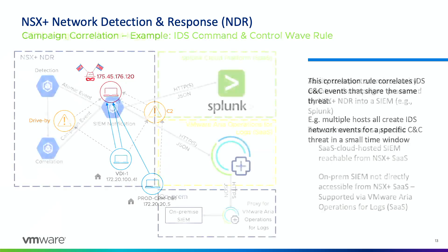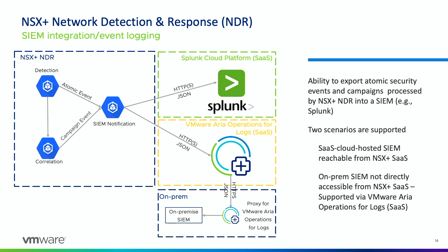The third key feature of NSX Plus NDR is the ability to export events to a SIEM. Many security teams use SIEM solutions to aggregate logs from different security controls. With NDR, we now send atomic events including all metadata — MITRE mapping, the VM name and UEID, and the site ID where detection happened — as well as campaign events to the SIEM. The fidelity of correlation within NSX Plus NDR is very high because we're correlating our own NSX events.